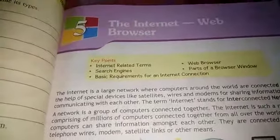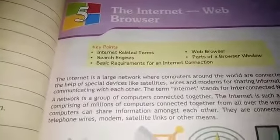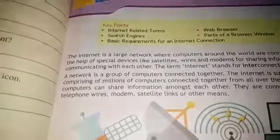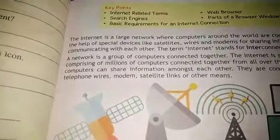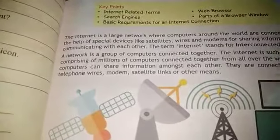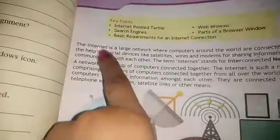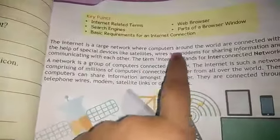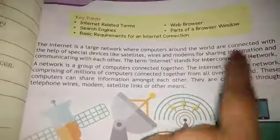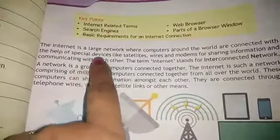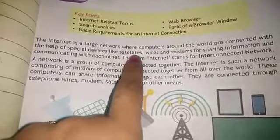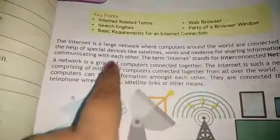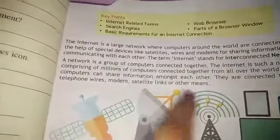This is Chapter Number 5: The Internet Browser. This chapter is related to the internet. In this chapter we have learned what the internet is. The internet is a large network where computers around the world are connected with the help of special devices like satellites, wires, and modems for sharing information and communicating with each other.